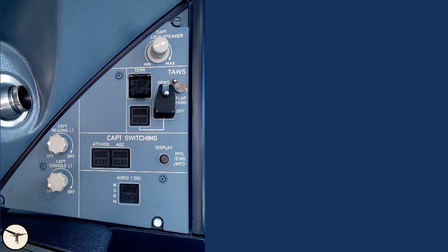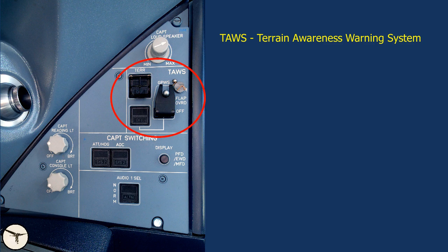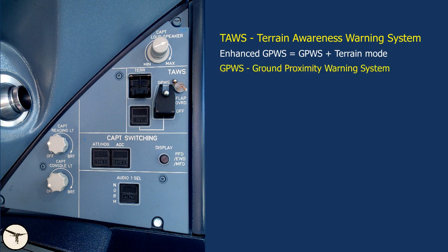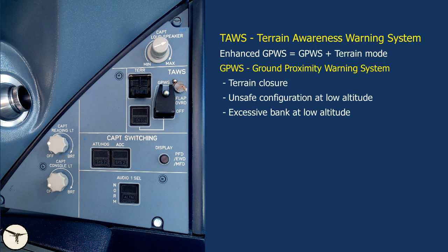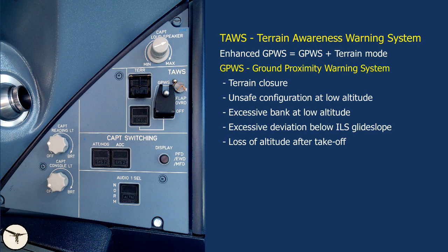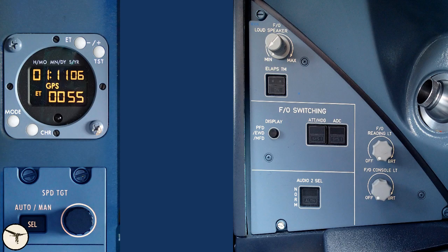Unique to the captain's side panel is the TAWS panel. TAWS stands for Terrain Awareness Warning System, also called Enhanced GPWS — it combines a GPWS plus terrain mode. The GPWS alerts against rapid terrain closure, unsafe configuration at low altitude, excessive bank at low altitude, excessive deviation below ILS glideslope, and altitude callouts after takeoff. The terrain mode uses GPS and alerts about terrain ahead of the aircraft. Unique to the first officer's side panel is the elapsed time push button, activated to start the elapsed time counter.